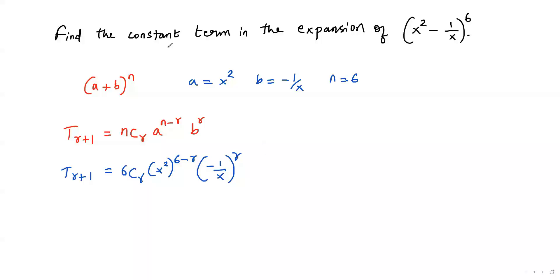Our aim is to find the constant term in the expansion. For the (r+1)th term, the variable x must have the exponent 0. When x has exponent 0, its value becomes 1, so there will be no x in the term. If there is no variable in a term, then it can be considered a constant term. So our target is for x to have exponent 0.